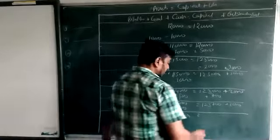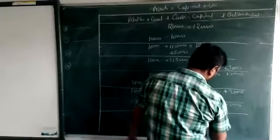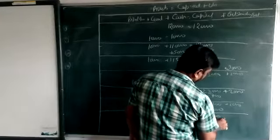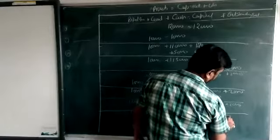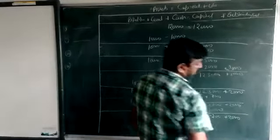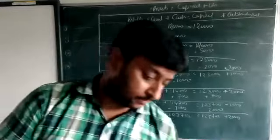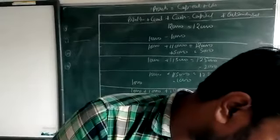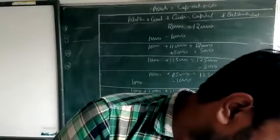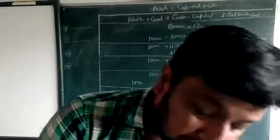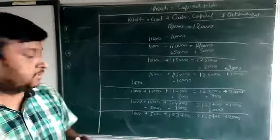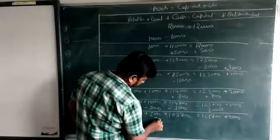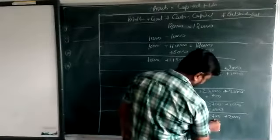Two thousand is profit — add to capital. Then last transaction: goods destroyed by fire, five hundred. Five hundred goods destroyed by fire.